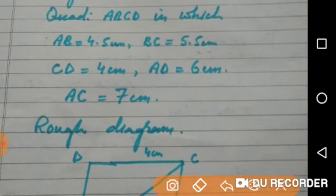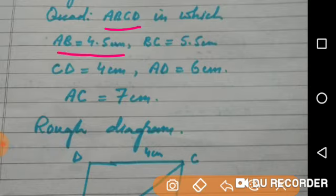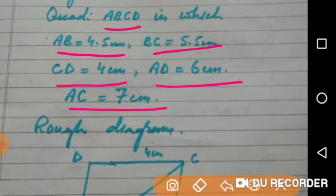We are being given a quadrilateral ABCD in which AB is 4.5 cm, BC is 5.5 cm, CD is 4 cm, AD is 6 cm, and AC is 7 cm.